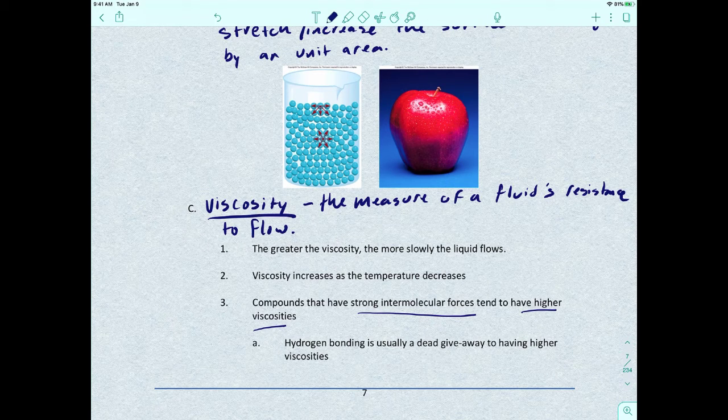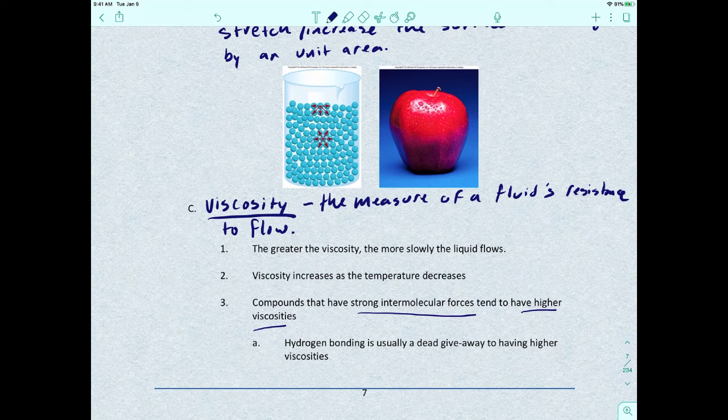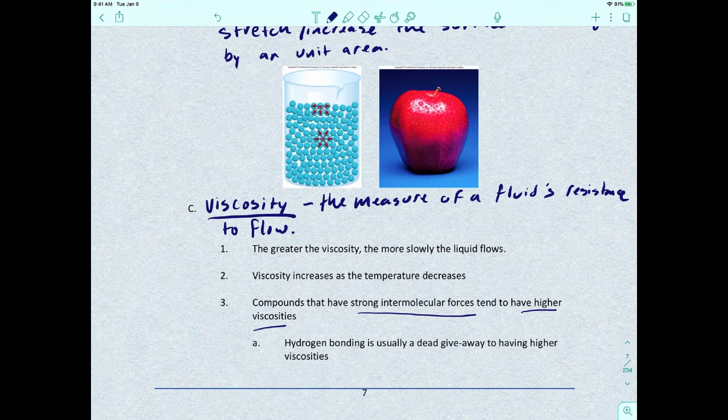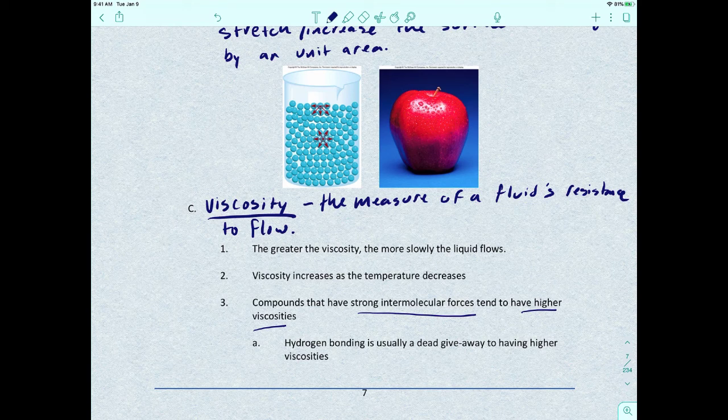Usually hydrogen bonds are a dead giveaway to having higher viscosities. So if a compound can exhibit hydrogen bonding, most likely that means the liquid is going to flow just a little bit slower.